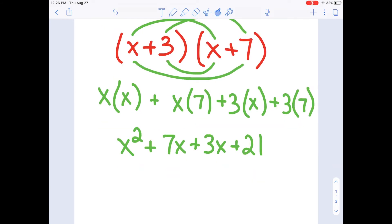And now we can combine our like terms. If you don't remember how to do that you can go back and watch one of my other videos on combining like terms. But when we combine 3x plus that 7x we should get x squared plus 10x plus 21.